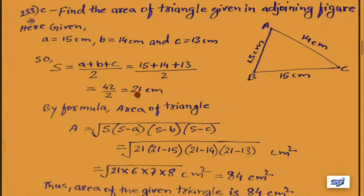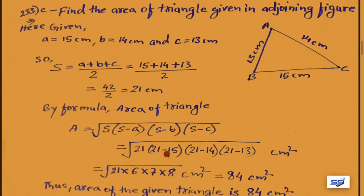By formula, semi-perimeter s equals (a plus b plus c) upon 2, equals (15 plus 14 plus 13) upon 2, equals 42 upon 2, equals 21 centimeter. Now using this value of s in Heron's formula, area equals root under s(s minus a)(s minus b)(s minus c), equals root under 21 into (21 minus 15) into (21 minus 14) into (21 minus 13), equals root under 21 into 6 into 7 into 8, which gives 84 centimeter square.